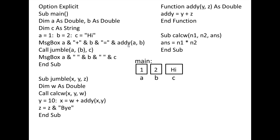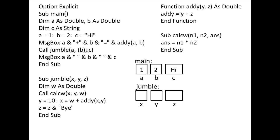The message box then displays 1 plus 2 equals 3. Next, the sub procedure Jumble is called. In Jumble, the variables X, Y, and Z are automatically created. X and Y in Jumble are given double data types because A and B in main are double variables. Z in Jumble is given a string data type because C in main is a string variable.